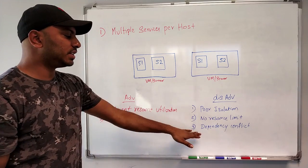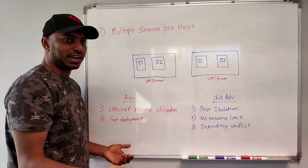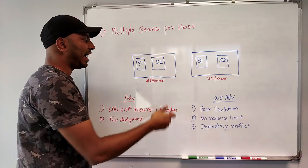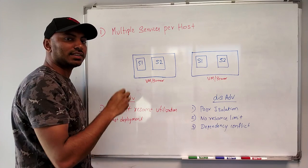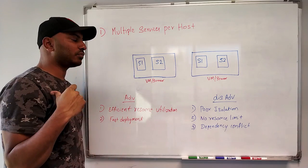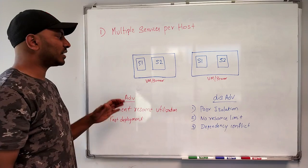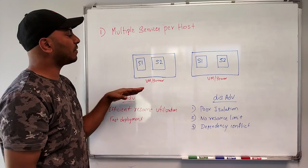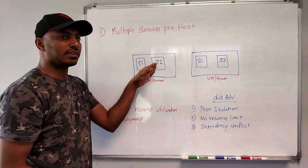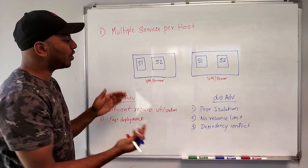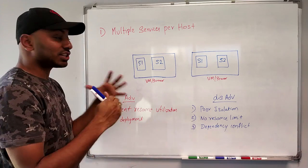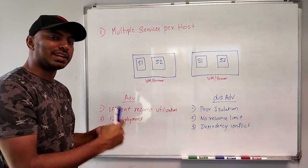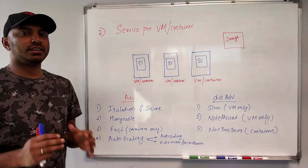The second disadvantage is we can't really limit the resource per service — any service can utilize all available resources and starve the others. The third disadvantage is dependency conflict. For example, if both are Java applications, one might use a package of a specific version while the other uses the same package at a different version, causing possible conflicts of libraries or OS-level libraries. This increases the complexity of deployment.